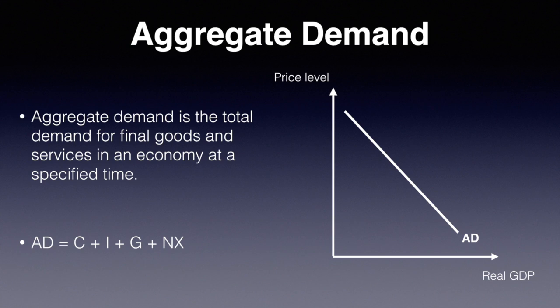This video is a quick introduction to aggregate demand, including its definition and components. Aggregate demand is the total demand for final goods and services in an economy at a specified time. The diagram on the right will be explained in a later video, but the key thing to notice is that it slopes downwards as the price level falls. Why that happens exactly we will explore later.